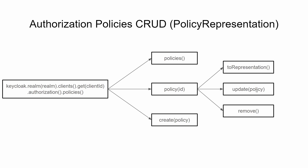The same pattern applies for policies as well. authorization.policies().policies() for the list, .create() for creating a policy, and .policy(id) gives that specific policy. Then .toRepresentation(), .remove(), and .update() work similarly.